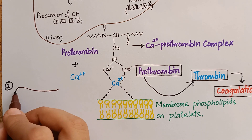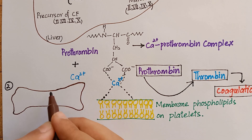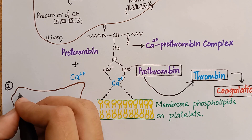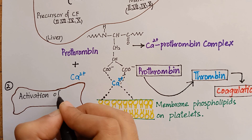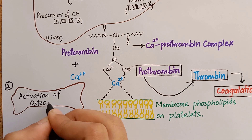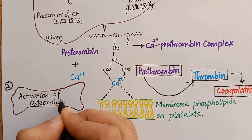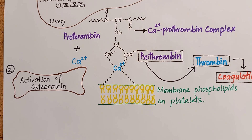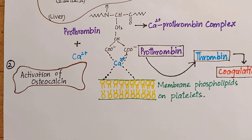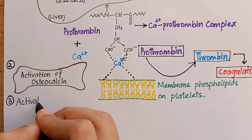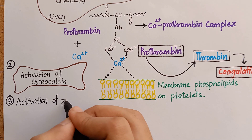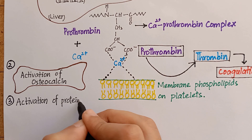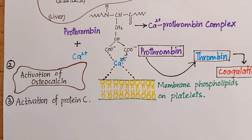Another important function of vitamin K is activation of osteocalcin in bones by the same mechanism of gamma carboxylation of glutamic acid. Osteocalcin is a calcium-binding protein found in bones. Vitamin K is also required in the activation of protein C, which is a protein involved in limiting the formation of blood clots.